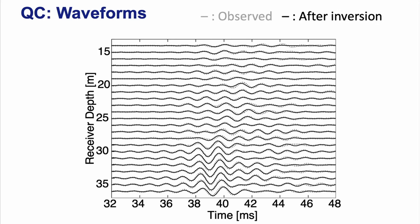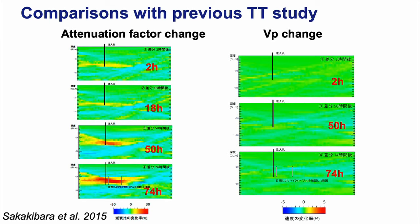Others have done a travel time study on this data: the travel time tomography from the right-hand side couldn't really detect velocity changes because much of the changes are in the amplitude. When they did an attenuation factor change estimation using first-arrival amplitude, they saw some differences, but those are mostly from geometric spreading or tuning effects from velocity change. Full waveform inversion combines this information and properly attributes it to the velocity change.